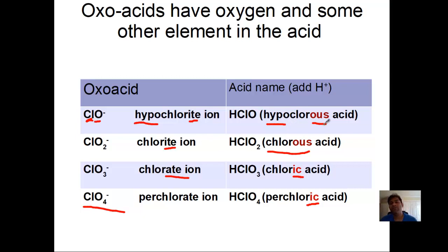This will become hypofluorous acid, HFO. HFO2 is fluorous acid. HFO3 is fluoric acid. HFO4 is perfluoric acid. One last one: iodine, let's replace the halogen chlorine with iodine.